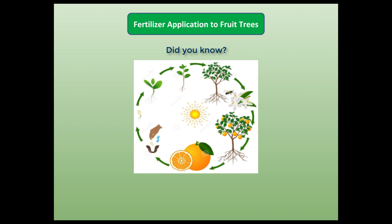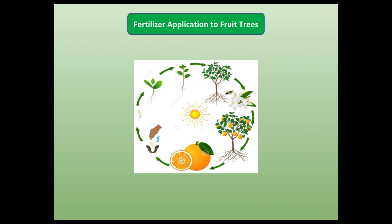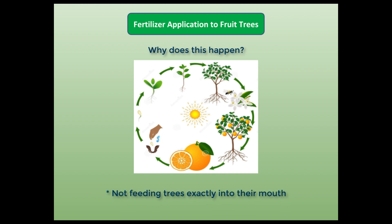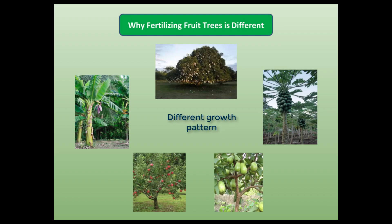Do you know that when we apply fertilizers, only 20% is taken by the roots and the remaining 80% goes to waste and is lost forever? This happens because we are not feeding the trees exactly into their mouth, and because we do not know where the tree's mouth is exactly located. By 'mouth' we mean the active roots — the location at which trees can absorb nutrients effectively and efficiently.